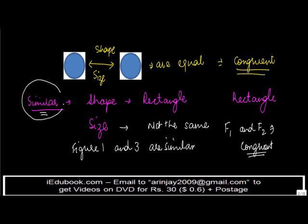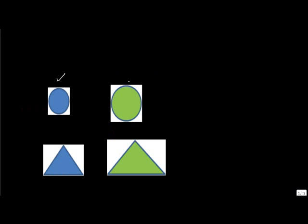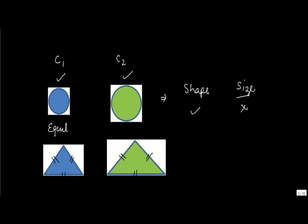We'll take the discussion on similarity a little further. If you look at this circle C1 and this circle C2, both of them are of the same shape, but the size is different — it's not the same — therefore these are similar. Again, if you look at these two triangles, assuming that these two triangles are actually equilateral triangles, their shapes would be the same but the sizes will be different, as you can see. So these are again similar figures, but not congruent.